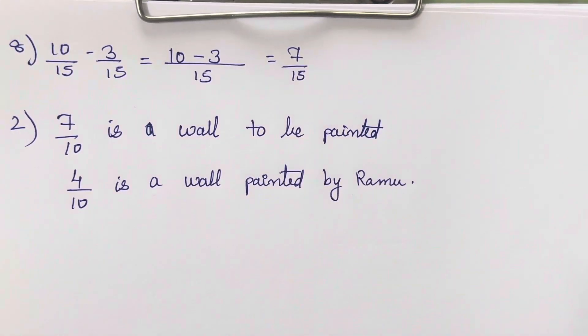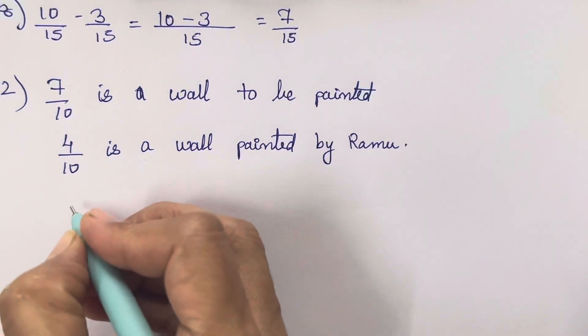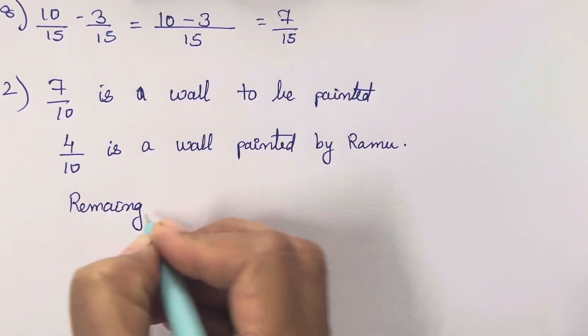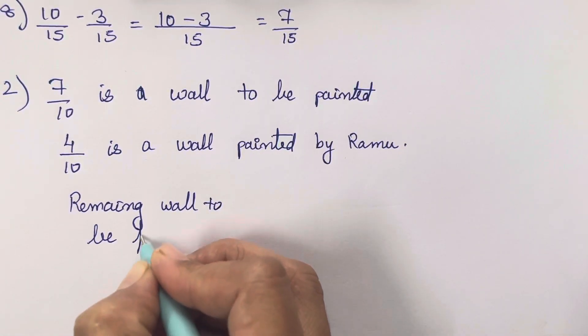So what we have to find? How much more needs to be painted? So remaining wall to be painted.